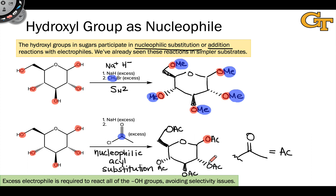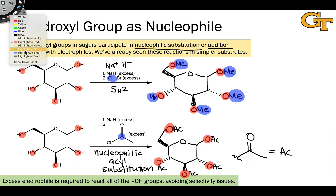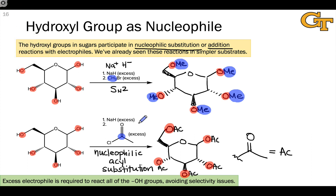Each of the hydroxyl oxygens acts as a nucleophile after being deprotonated by sodium hydride, and the carbonyl carbons in acetyl chloride act as electrophiles, installing the acetyl group through a nucleophilic acyl substitution process — nucleophilic addition of the alkoxide to the carbonyl carbon followed by beta elimination of chloride.